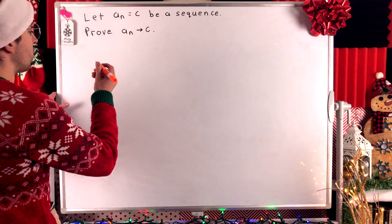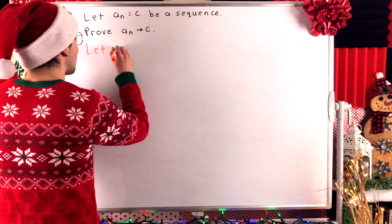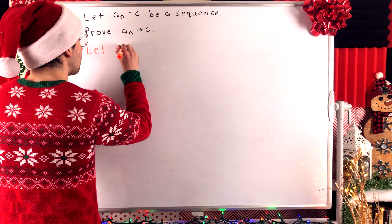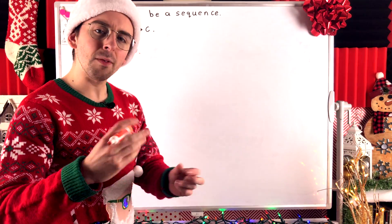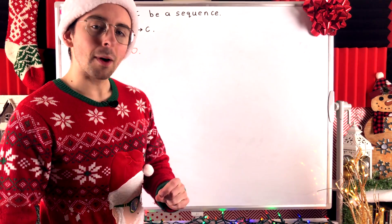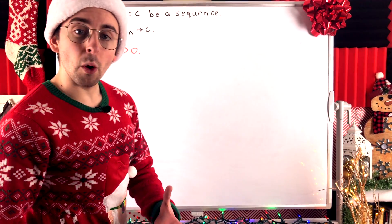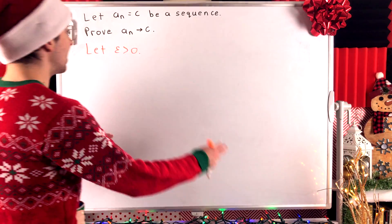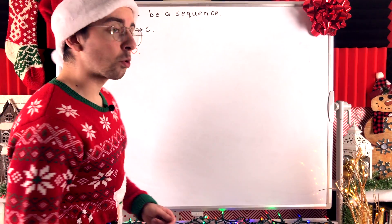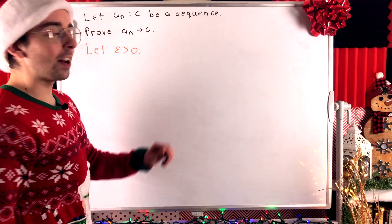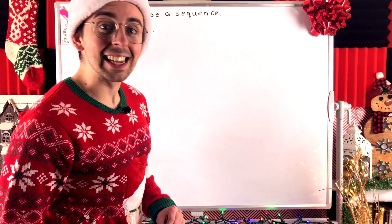We all know how a convergent sequence proof begins — we have the classic "let epsilon be greater than zero." This is just fixing some arbitrary positive real number, where the rest of the proof is going to show that we can guarantee our sequence will eventually be within epsilon of its supposed limit, which we think is C.